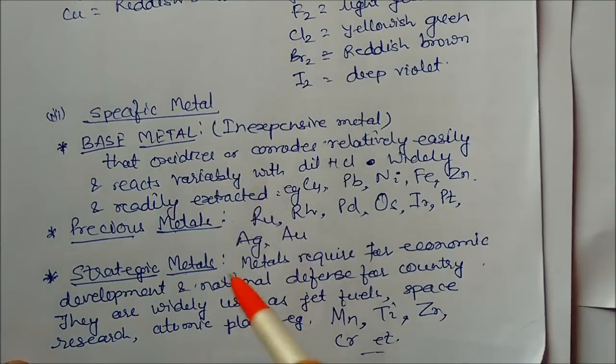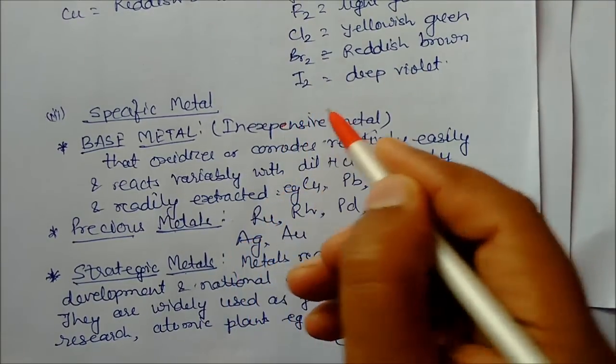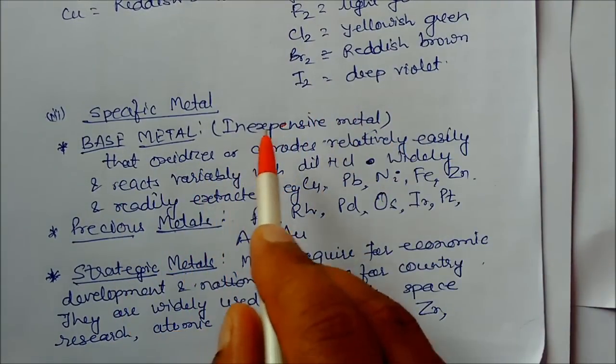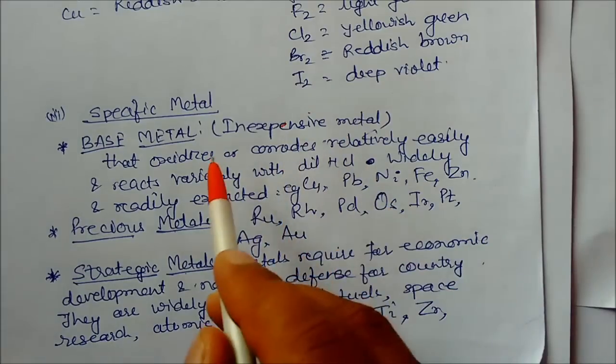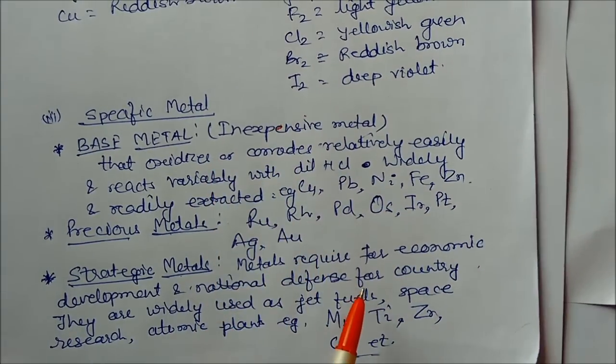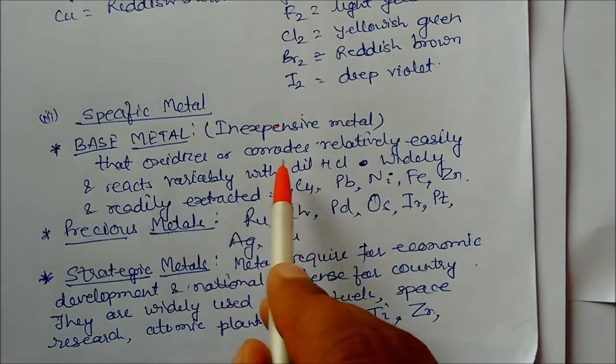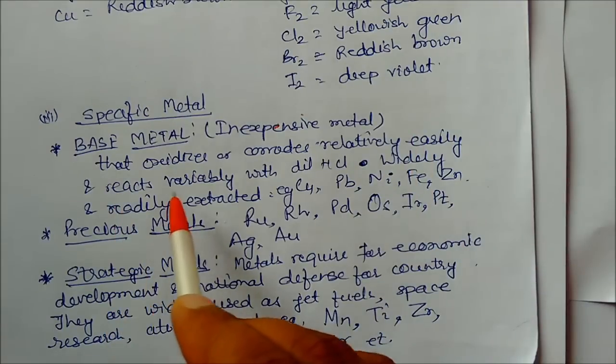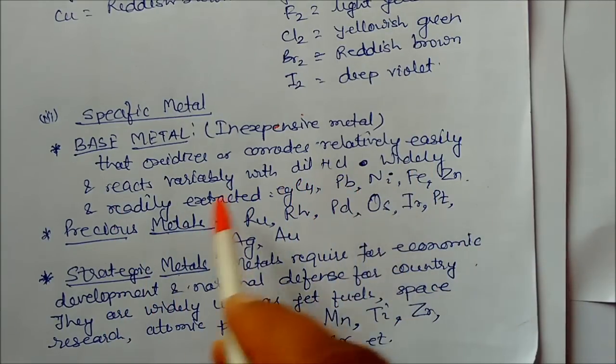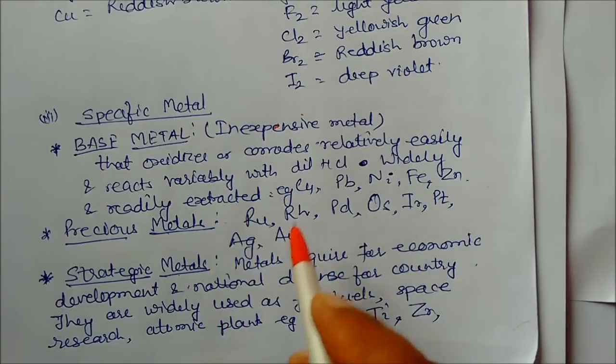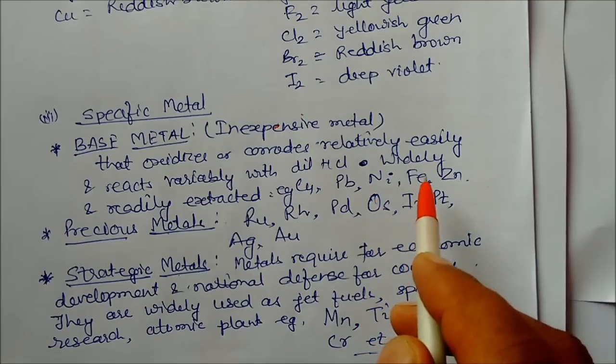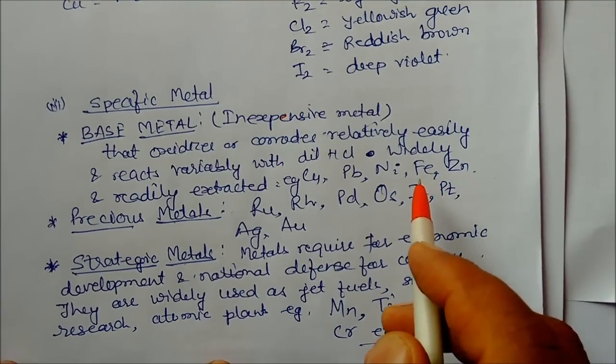Base metals are inexpensive metals that oxidize or corrode relatively easily and react readily with dilute HCl. They are readily extracted from the Earth, like copper, lead, nickel, iron, and zinc.